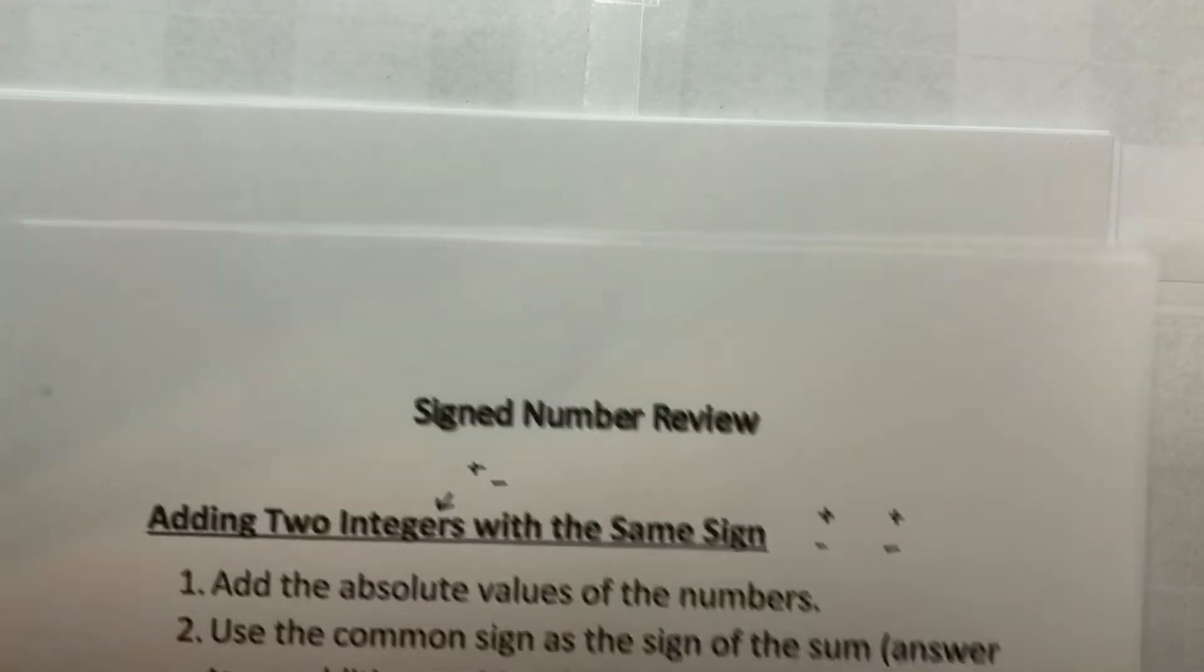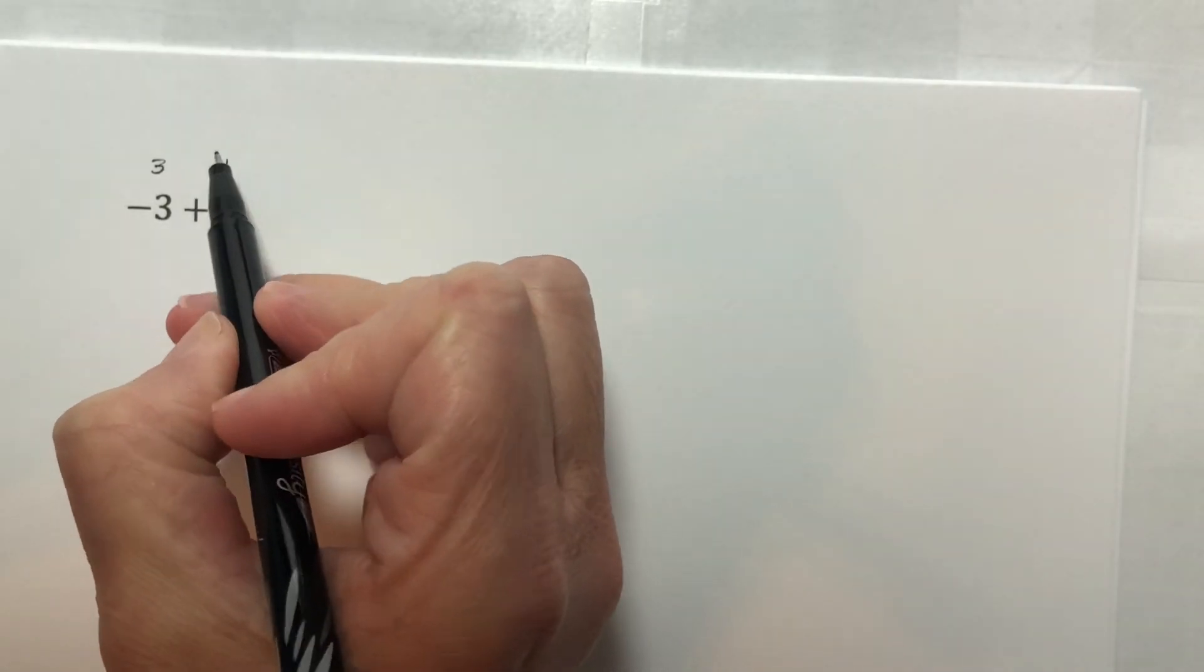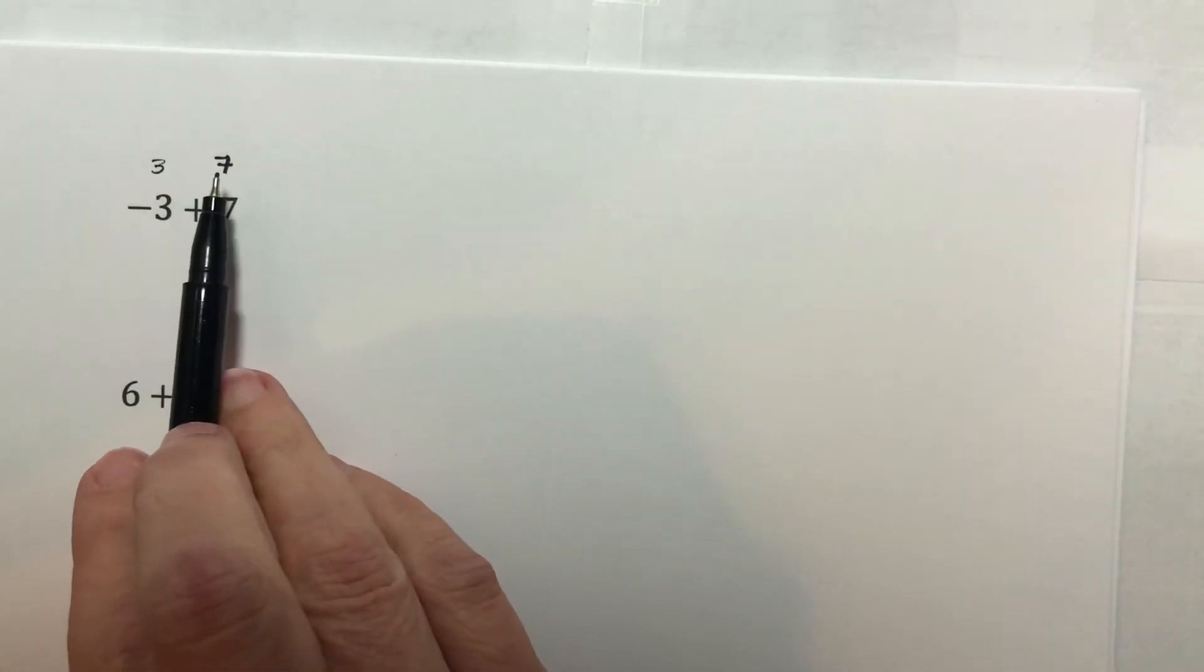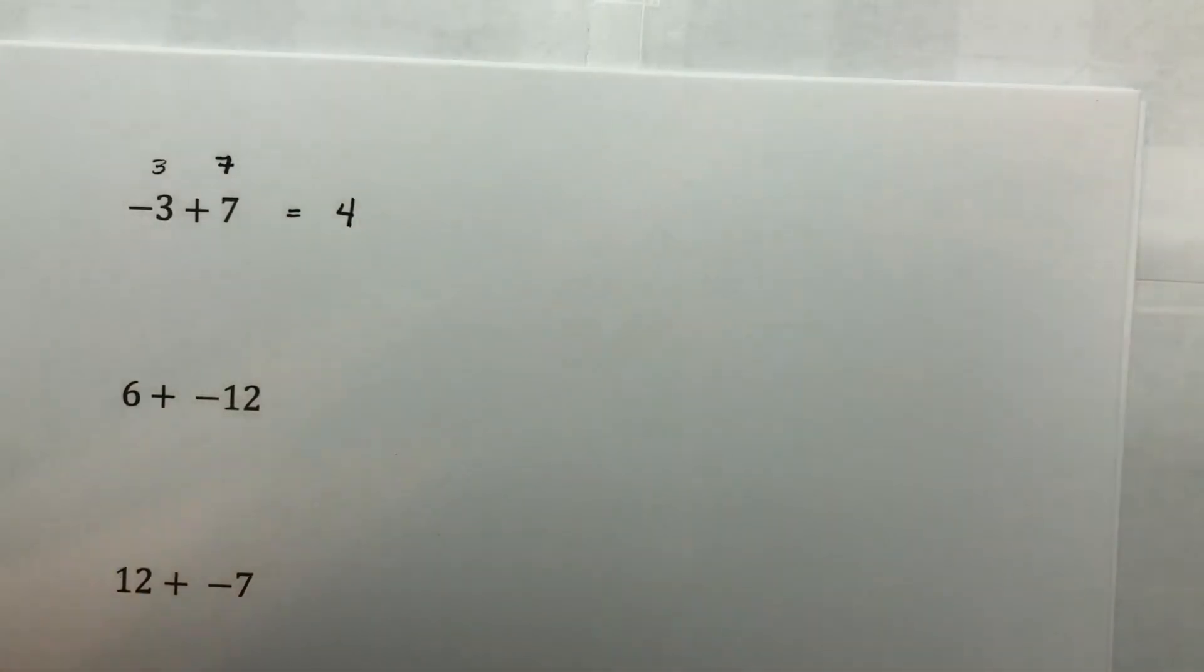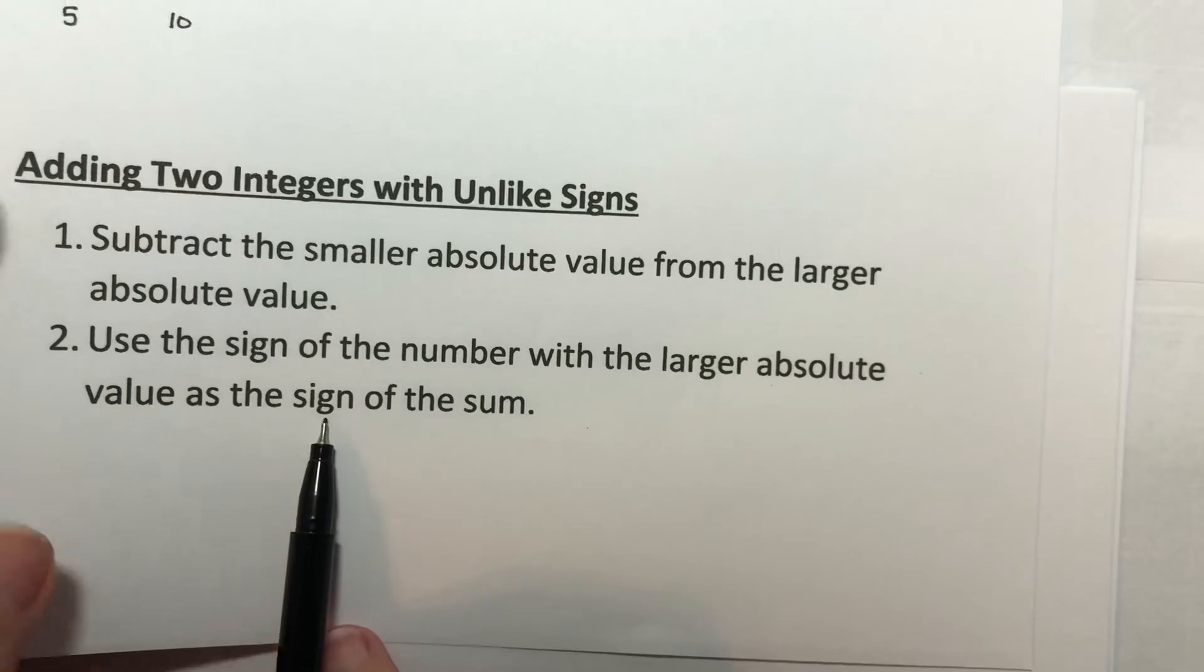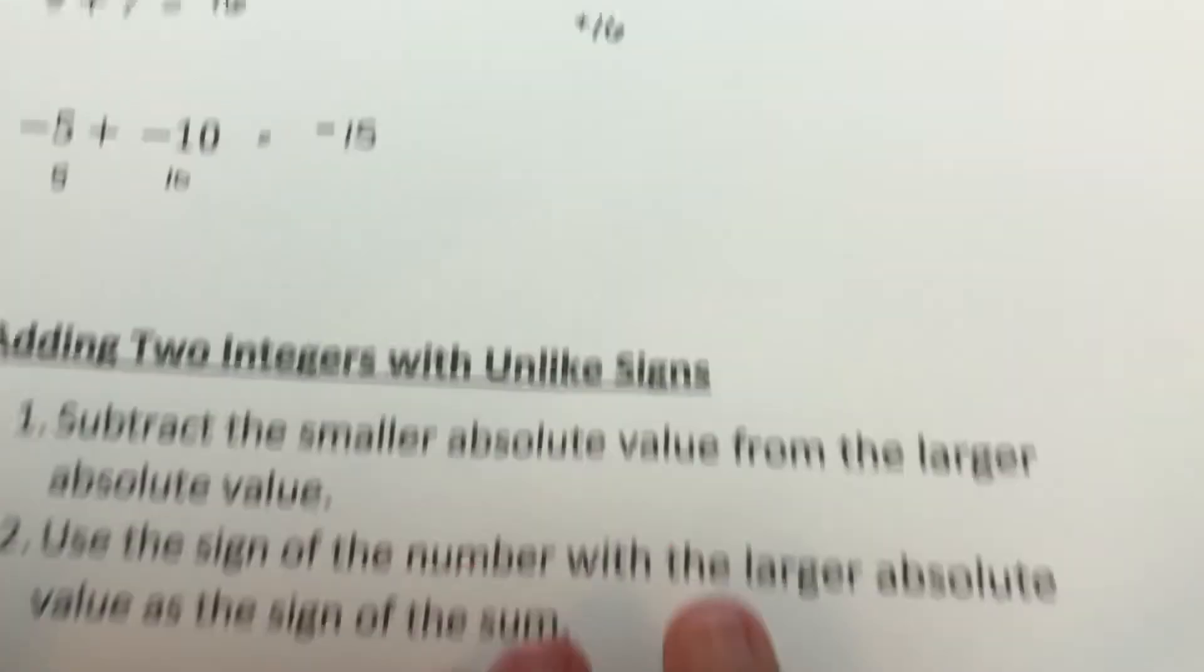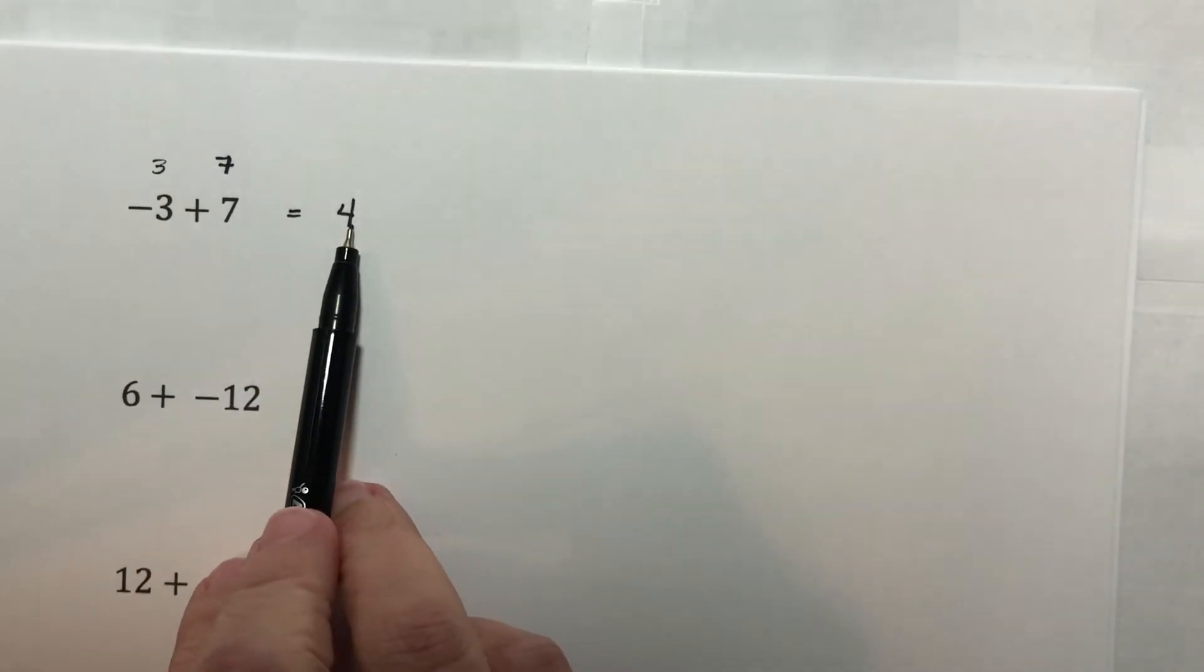So if we look at these next problems, I have negative three plus seven. The absolute value of negative three is three. The absolute value of seven is seven. And we subtract in what we would consider a normal order. Seven minus three is four. So we subtract the smaller absolute value from the larger absolute value. We've done that. Now we figure out what the sign that we're going to use is. The larger absolute value, whatever its original sign is, that's the sign that we use. Our larger absolute value here is seven. The seven was positive. So our answer is positive.